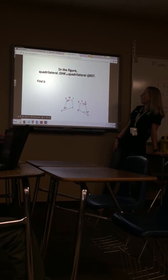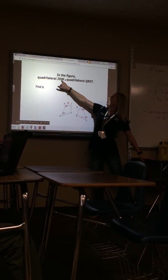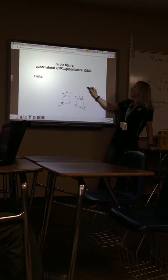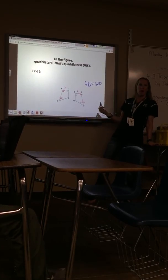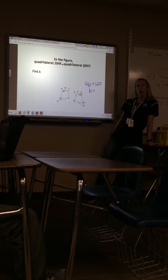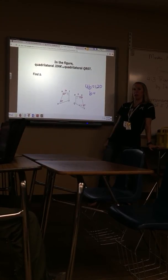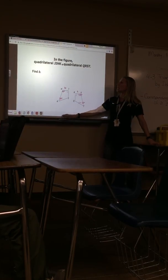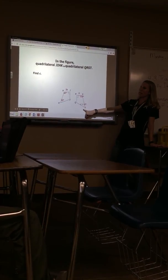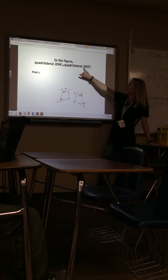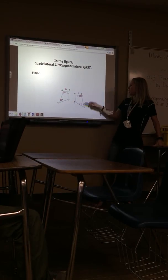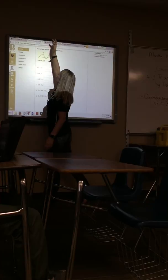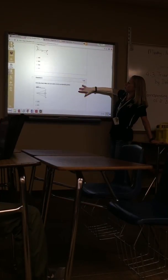Let's try another one. If I want to find B, B is angle H — the third letter. That would be congruent to angle S, which is 120. So 4B equals 120. Divide by four — B equals 30. Then if I want to find C, C is angle T — last letter — which is congruent to angle K, last letter. So C plus 10 equals 30, and C would be 20. You will have some algebra problems after the matching.